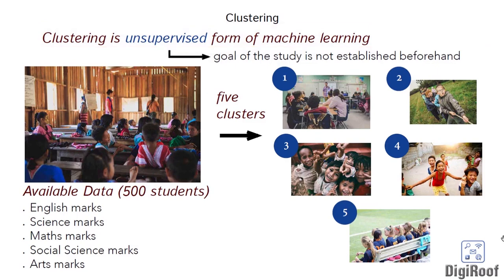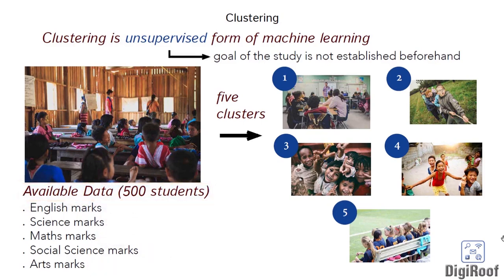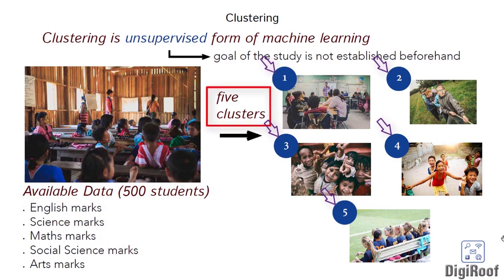Now let's understand the benefit of identifying these clusters using some examples. Suppose you have data of 500 students that include their score in 5 subjects. Through clustering techniques, let's say we identified 5 groups of students, with each group having students with similar kind of marks. We can refer to these 5 identified groups as 5 clusters. By identifying these clusters, focus programs can be created that could cater to students with different kind of studying needs.